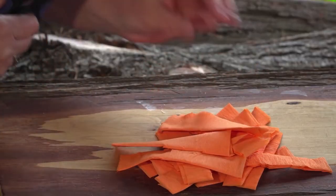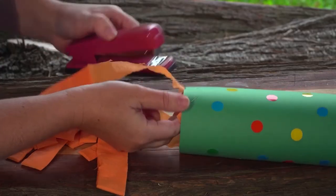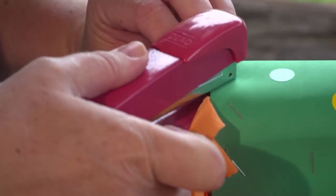Using your tissue paper cut some narrow strips out. Staple the end of each strip into the inside of one end of your rolled up paper. Space them out evenly.